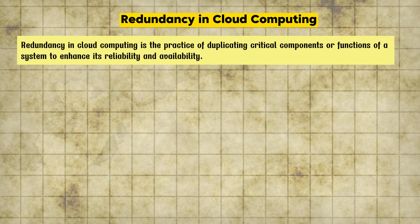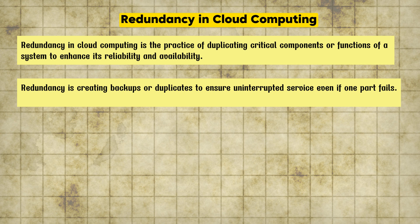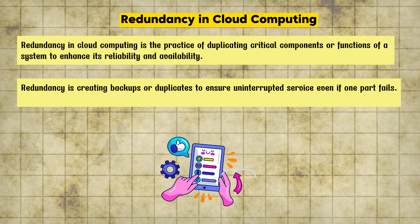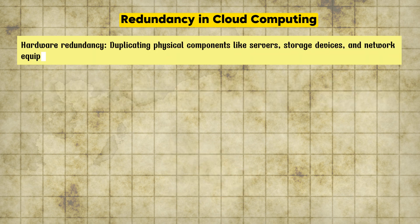Redundancy in cloud computing — whether AWS, Microsoft Azure, or Google GCP — is the practice of duplicating critical components or functions of a system to enhance its reliability and availability. It's about creating backups or duplicates to ensure uninterrupted service even if one part of the application fails. This ensures high availability, data protection, and business continuity.